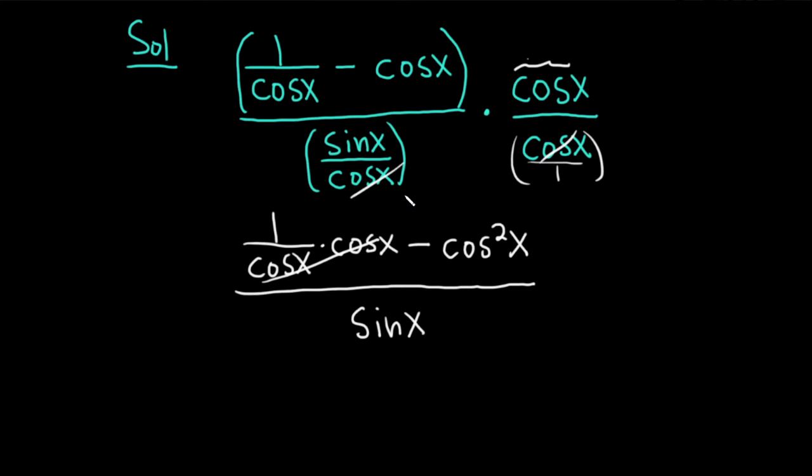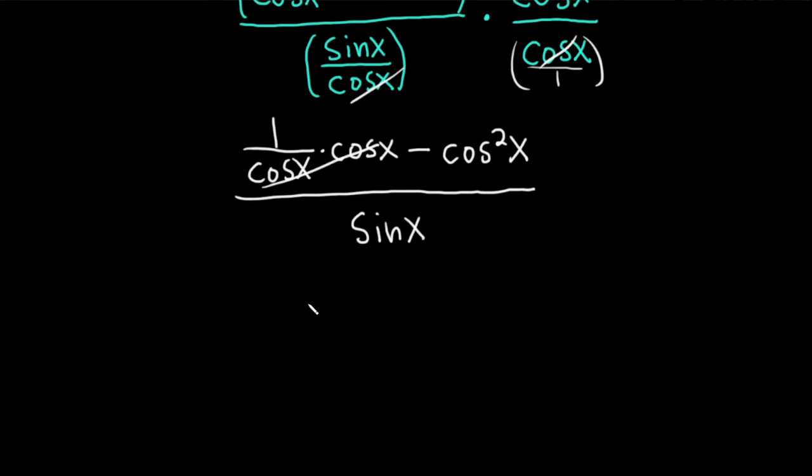These cancel as well. We end up with 1 minus cosine squared x over, all divided by sine of x.